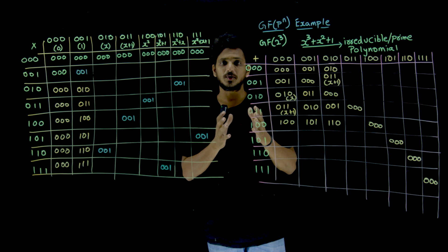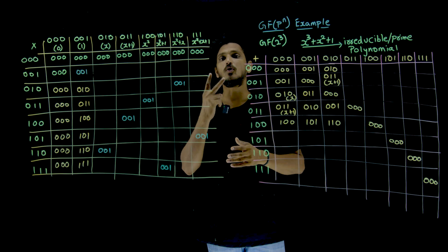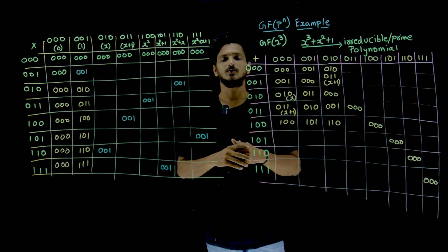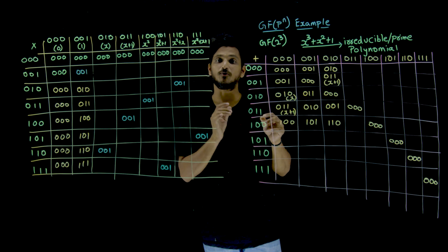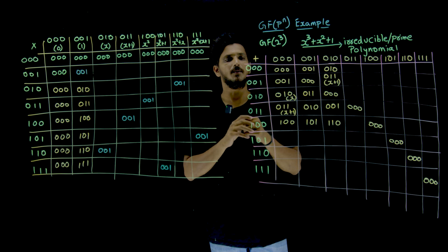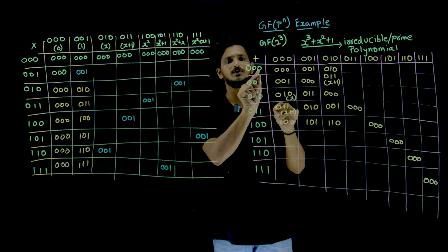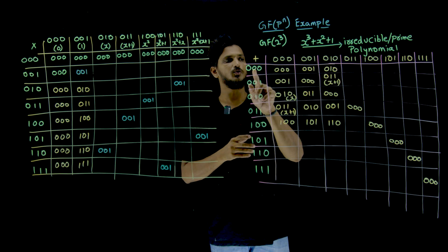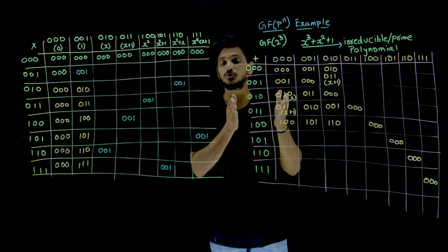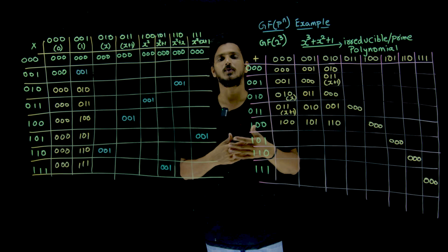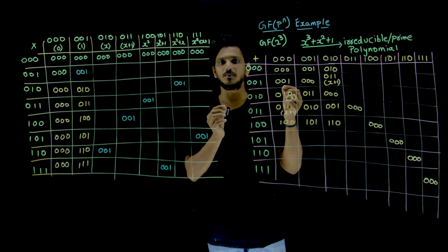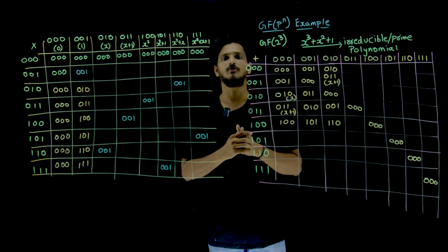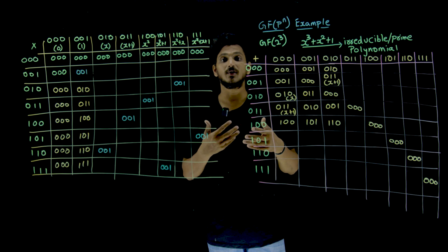In order to satisfy the properties of a field, it has to satisfy the properties of a group, and two operations have to satisfy — addition and multiplication. So in order to understand that whether it is satisfying the properties, what is the first property? Closure property. Take two elements from the set — 000, 001 — add them. Here addition means XOR operation. You do the XOR operation, and the output should be in the set. Then it is satisfying the closure property. You take any two 3-bit words, do the XOR operation, and you are going to get a value present in the 3-bit word set. So it is satisfying the closure property.